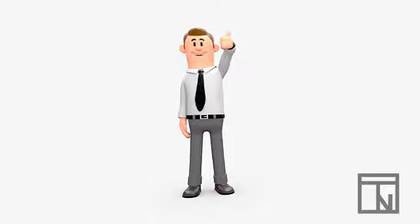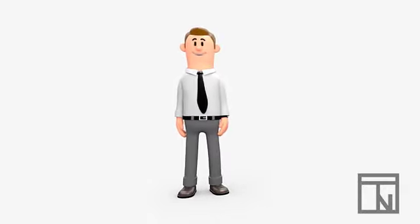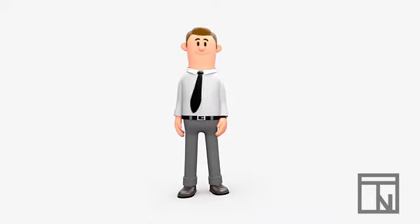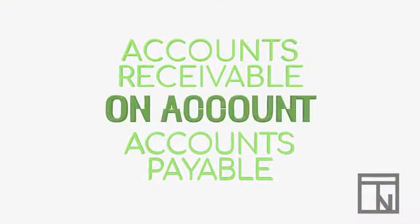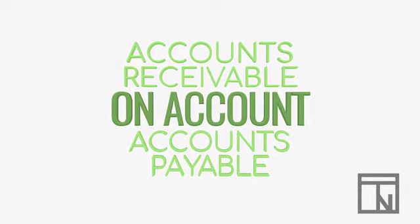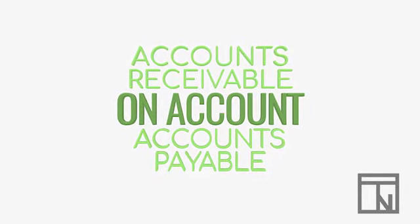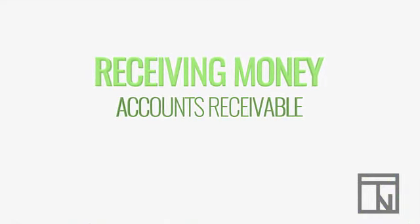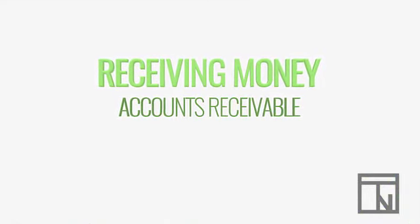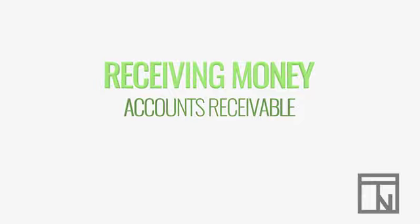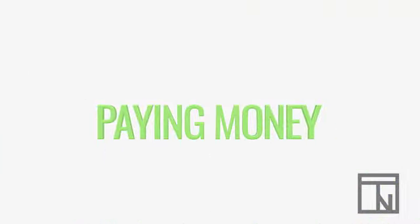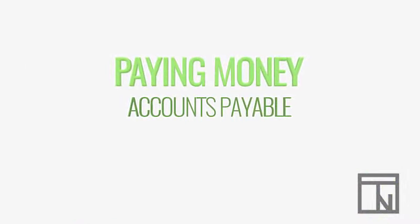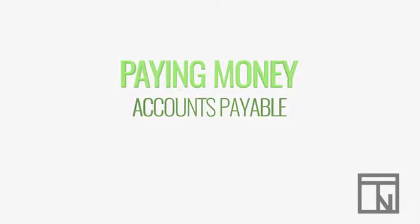This may sound a little confusing at first, but the more you work with these two accounts, the more familiar it will become. For now, just remember these three things. First, when you see the phrase 'On Account,' know you are working with either Accounts Receivable or Accounts Payable. Second, if you are receiving money or will receive money in the future, then that's Accounts Receivable. And third, if you are paying money or will pay money in the future, then that's Accounts Payable.